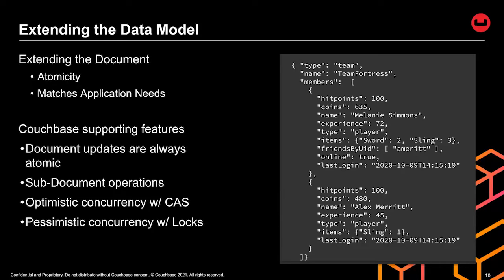In the game sim sample, a team with an underlying set of players eventually produces a document that gets too big — you need to split things into separate documents. Also, denormalization can sometimes make data access worse when querying. There are times it makes sense to denormalize and times to normalize further. When you do work with a single document, Couchbase document updates are always atomic. You also have sub-document operations, optimistic concurrency with CAS, and pessimistic concurrency with locks.